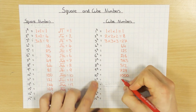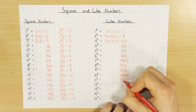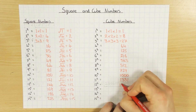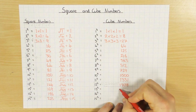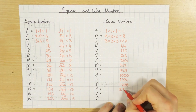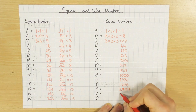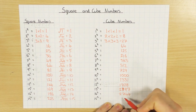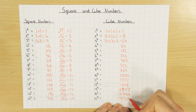These ones here I wouldn't worry too much about, but just to complete this: 11 cubed is 1,331. 12 cubed, 1,728. 13 cubed, 2,197. 14 cubed, 2,744. And the last one, 15 cubed, 3,375.